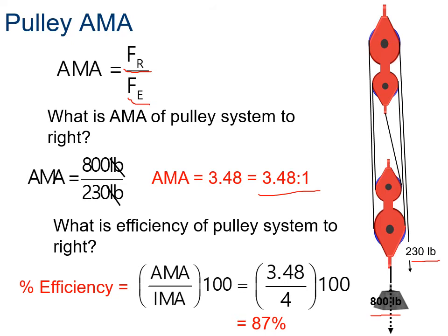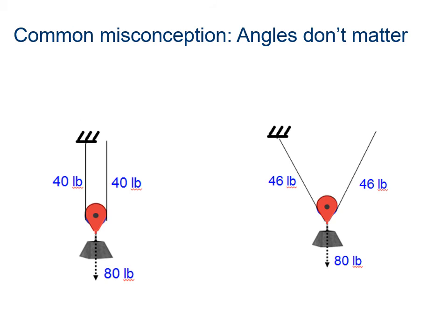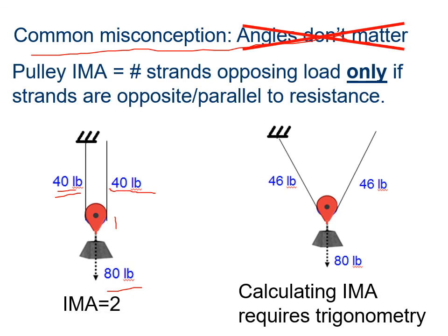There's a common misconception that angles don't matter. In real life, angles do matter. When we calculate IMA, we don't really focus on angles, but in real life they do matter. In this case, if we've got 40 pounds, this 80-pound mass we're separating—this strand is taking 40 pounds, this one's taking 40 pounds, so that's what gives us an IMA of two. On the other hand, in this particular case, because it's at an angle, it's not straight up and down, it's going to take us more than 40 pounds. It would take us 46 pounds.